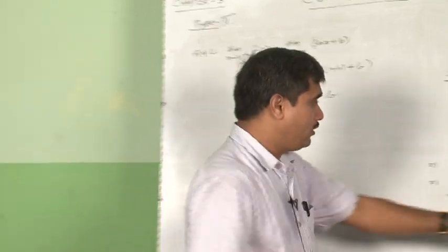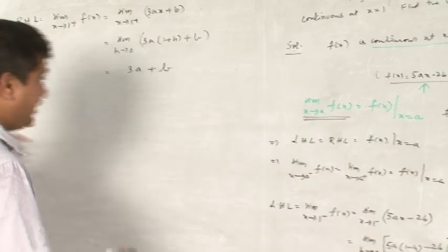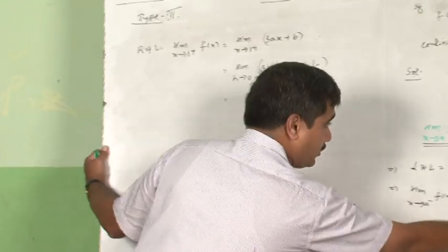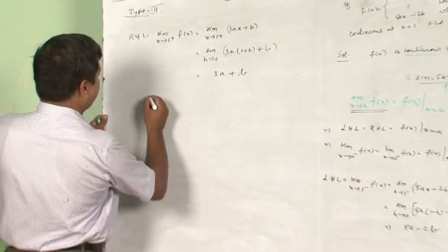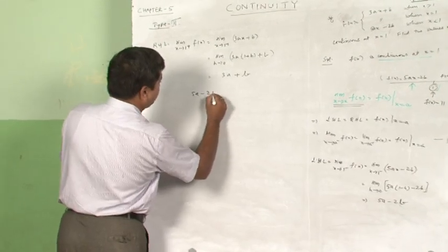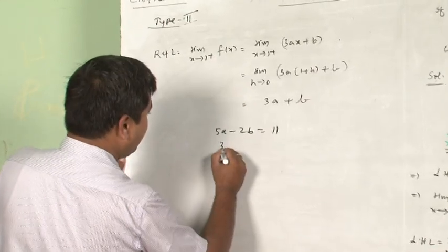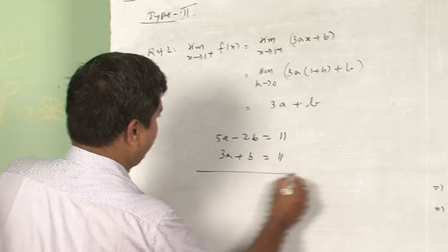Now I shall be concentrating on the one which I have framed here, equation number 1. From this it follows directly the LHL value should be equal to this and RHL value should also be this. That means LHL value is 5A minus 2B, and it is equal to 11, and of course the RHL is 3A plus B is equal to also 11.